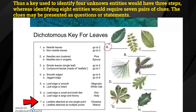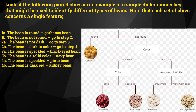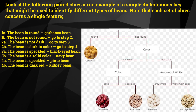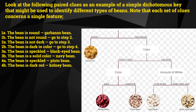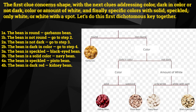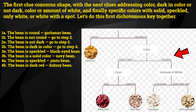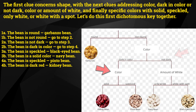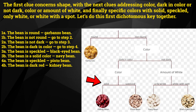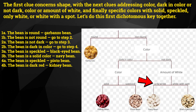The clues may be presented as questions or statements. Look at the following paired clues as an example of a simple dichotomous key that might be used to identify different types of beans. Note that each set of clues concerns a single feature. The first clue concerns shape, with the next clue addressing color — dark in color or not dark — then color or amount of white, and finally specific colors with solid, speckled, only white, or white with a spot.